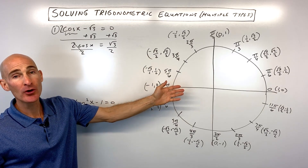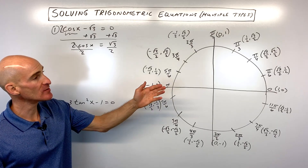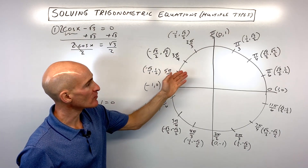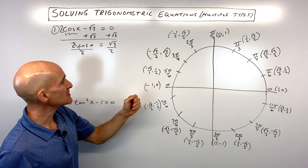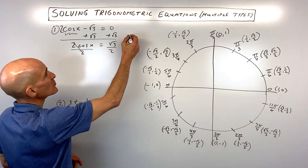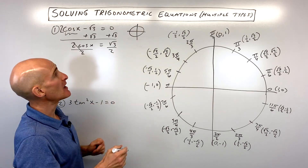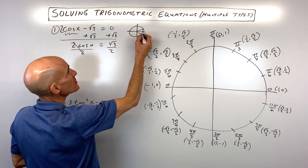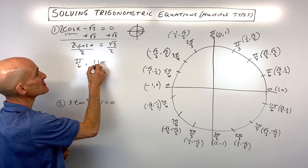Remember, on the unit circle, cosine is the x-coordinate, sine is the y-coordinate, and tangent is y divided by x. So we ask ourselves: where is x equal to √3/2? We can see it's here at π/6, and also over here at 11π/6. I like to make a little sketch on the side of the paper just so I can see what's happening. So I know it's here and here, and I'm going to write this as π/6 and 11π/6.